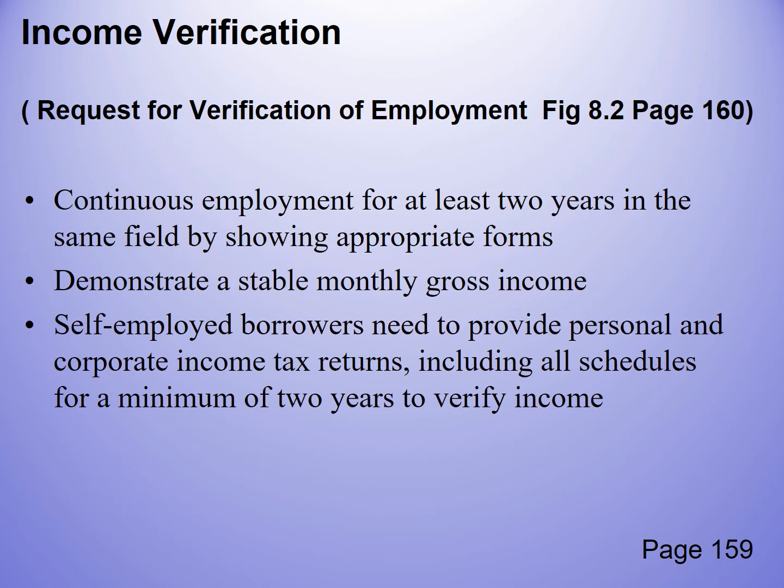On page 143 we see an income verification form — a standardized form that calls for three main things: (1) continuous employment for at least two years; (2) demonstrating a stable monthly gross income; and (3) if you're a self-employed borrower, you need to provide not only personal but also corporate income tax returns for a minimum of two years.